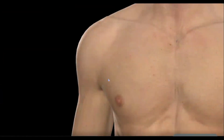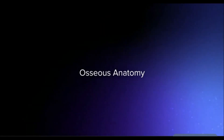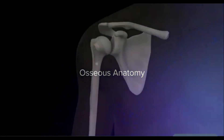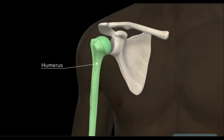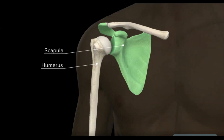Before understanding its biomechanics, it is important to understand the shoulder's complex anatomy. The osseous anatomy of the shoulder consists of the humerus, scapula, and clavicle.